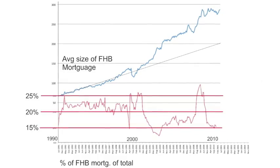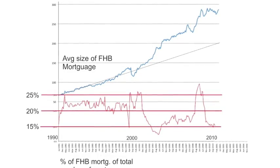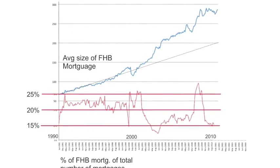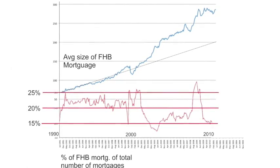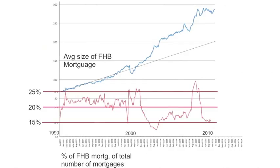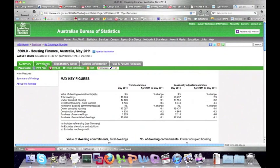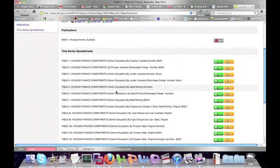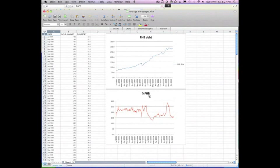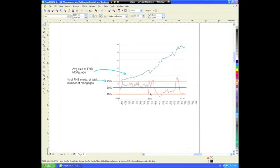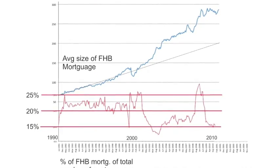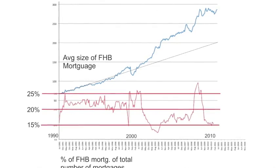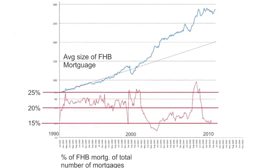Thanks for staying watching. I'm going to go into a bit more detail now on the relationship between these two curves: the average first homeowner mortgage and the percentage of first home owners in the market. I've taken this data from the Australian Bureau of Statistics website, graphed it on the same scale in Excel and overlaid the graphs in my graphics software. I want to explain further why I feel investors have been the main cause of pushing the average first home buyer mortgage to unaffordable levels.